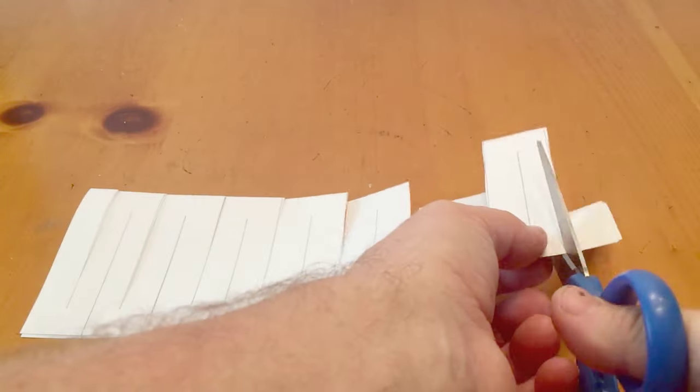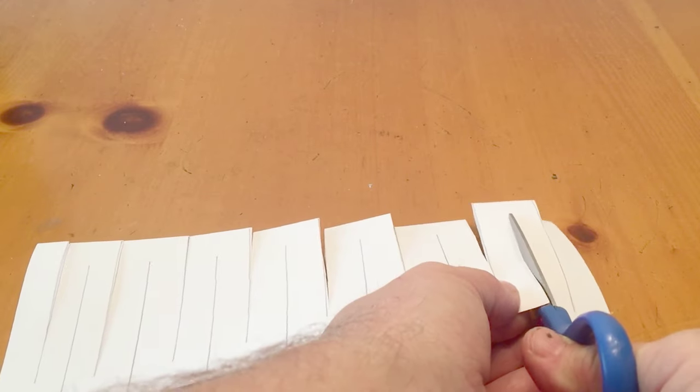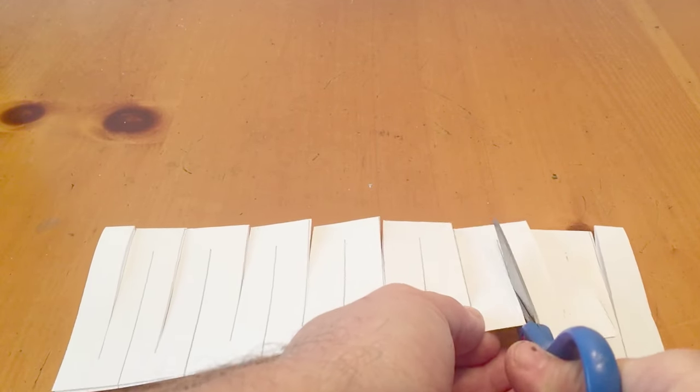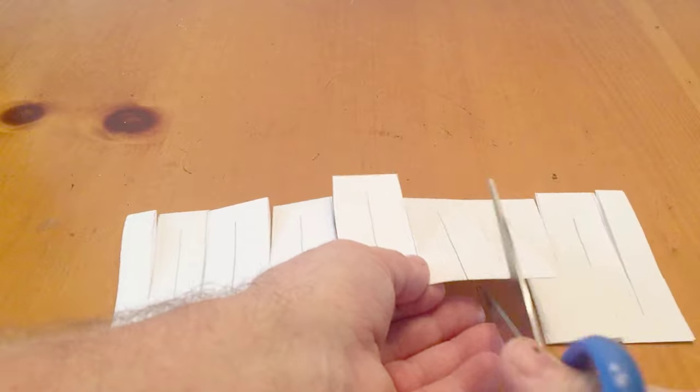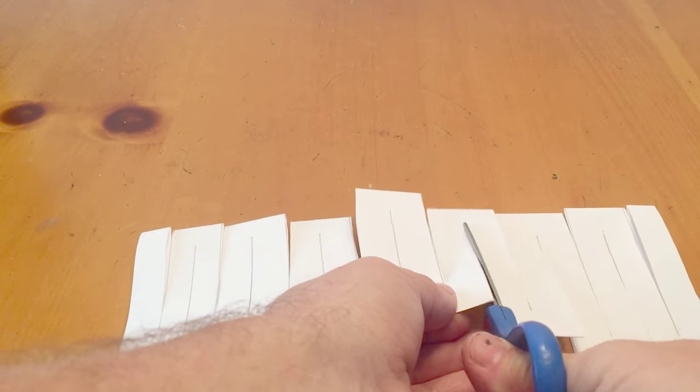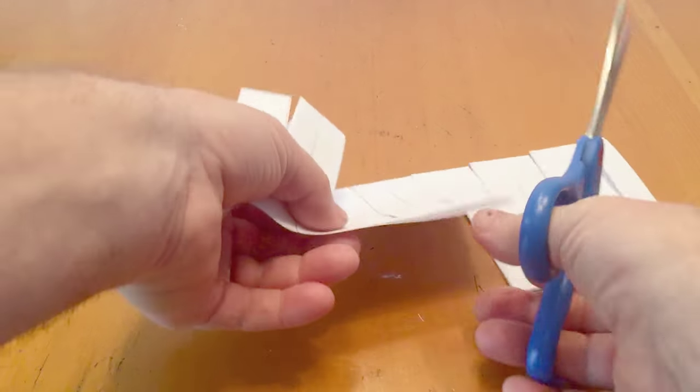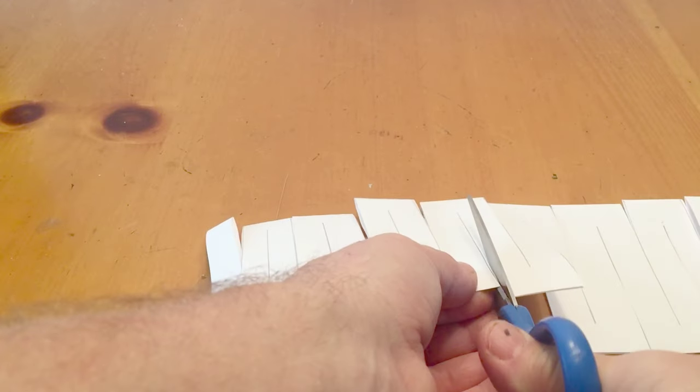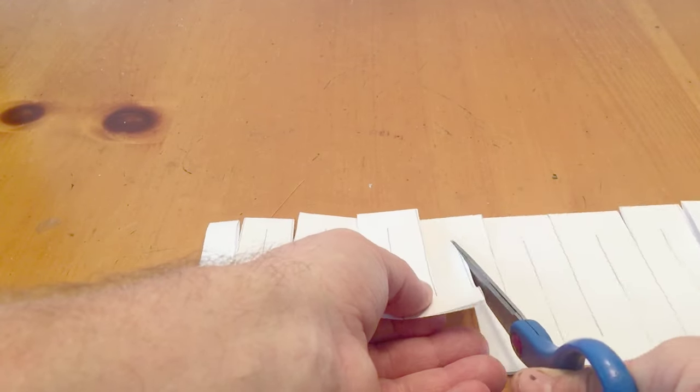So now we flip the paper around and now we're starting to cut up the paper the other way. So all the lines are cut all the way through. In the description I'll have a link to where you can get a printout with the lines already pre-done on a piece of paper.